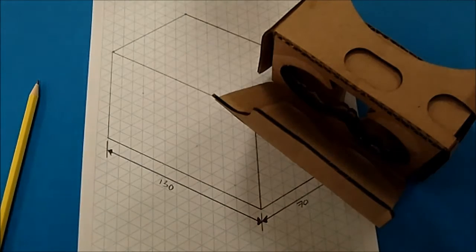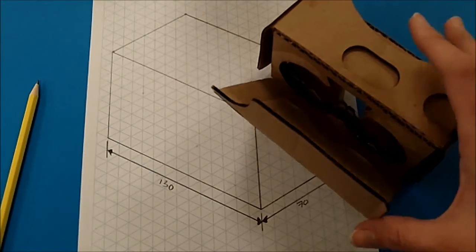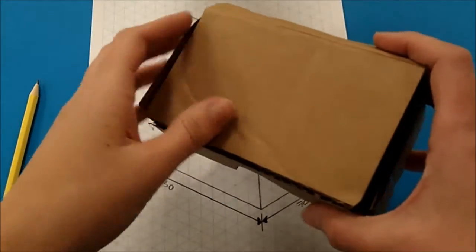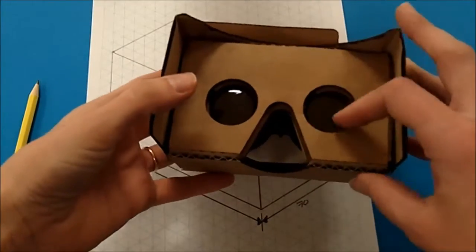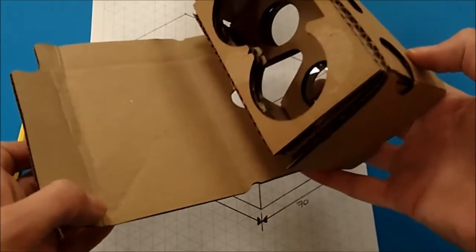Welcome back to the second tutorial on drawing our Google Cardboard using isometric paper. In front of me today I brought with me a prototype of my Google Cardboard. You can see this has just been constructed using some bottle caps over the front, and the front flap here is where your phone would slot inside.